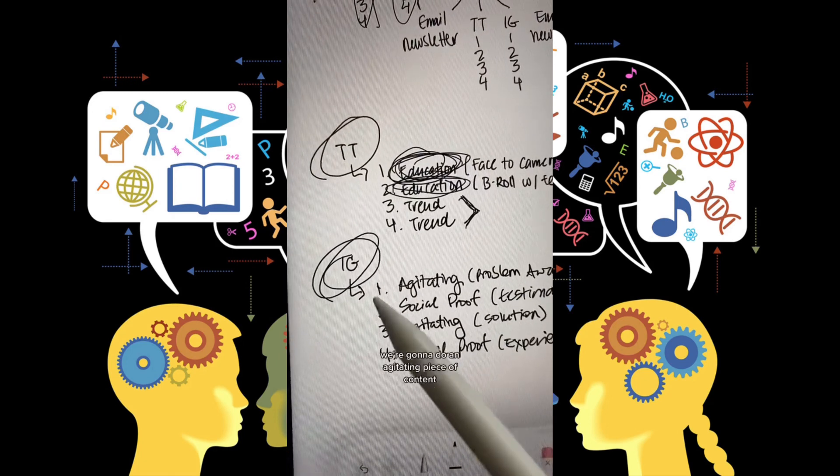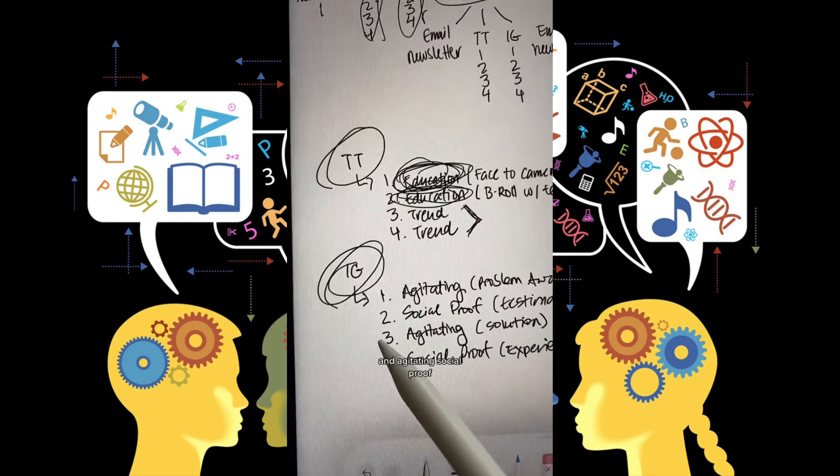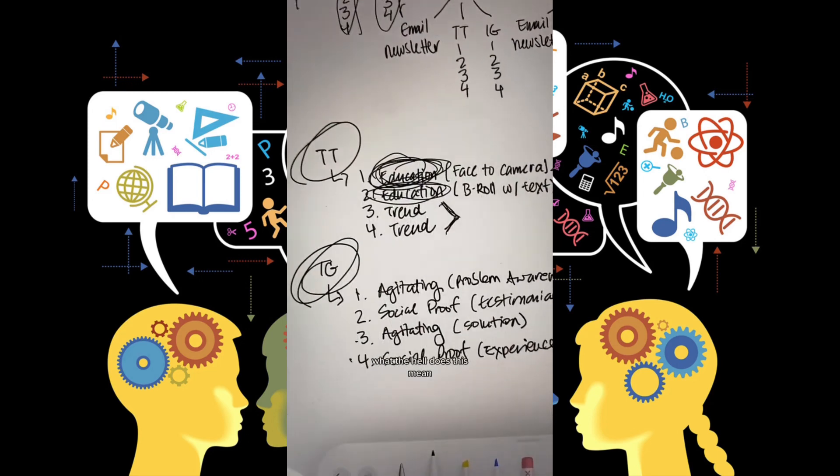For Instagram, we're going to do an agitating piece of content, social proof, and agitating social proof. What the hell does this mean?